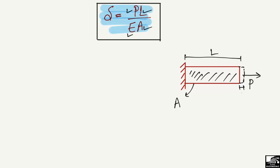Due to this tensile load, there will be some deformation in this member — we call it small sigma — so there is some tensile deformation. Also due to the tensile load, there will be tensile stresses and strain created in this rod.